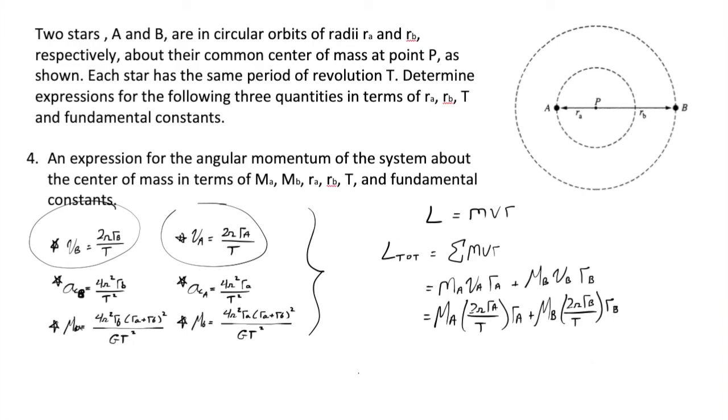Now, from the looks of it, if we wanted to make this nice and tidy, we do have some like terms. Both of them include the 2 pi and the T. So I can factor that out as follows. 2 pi over T. And a big old bracket or parentheses. And we're going to have MA, RA squared for multiplying those. And the same thing for star B.